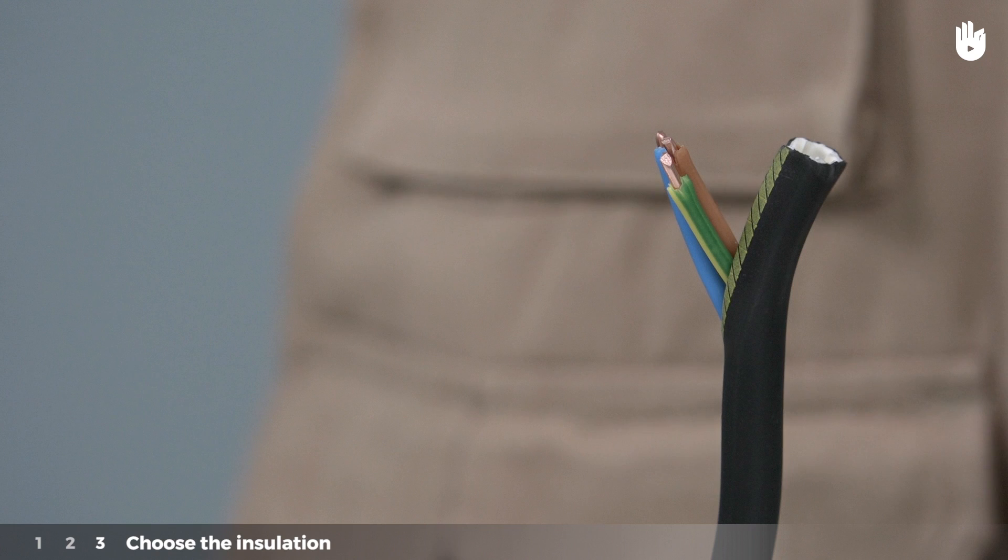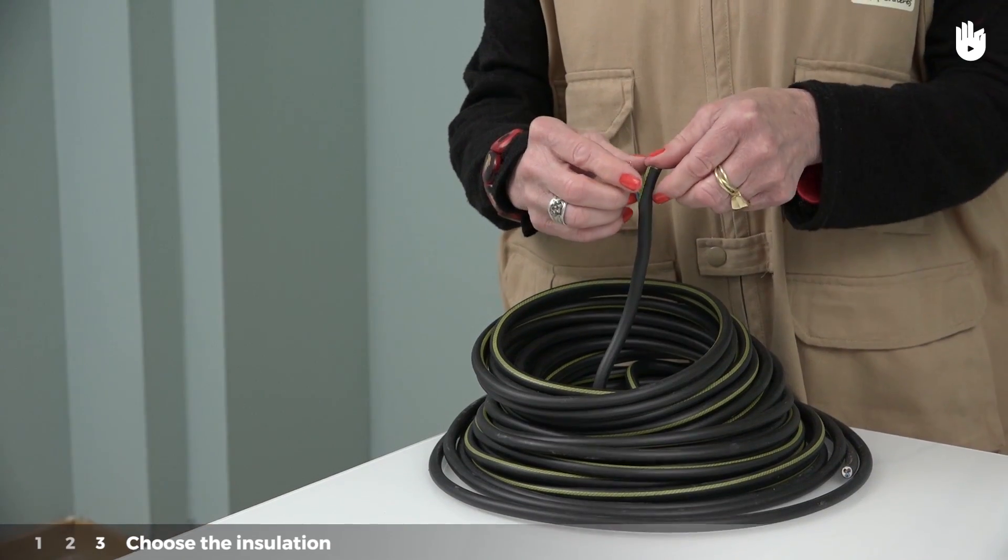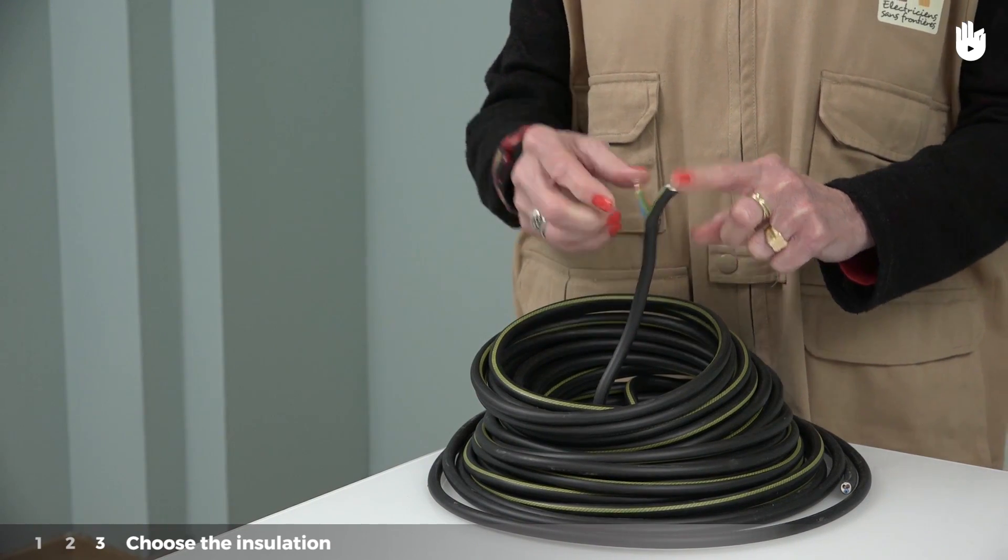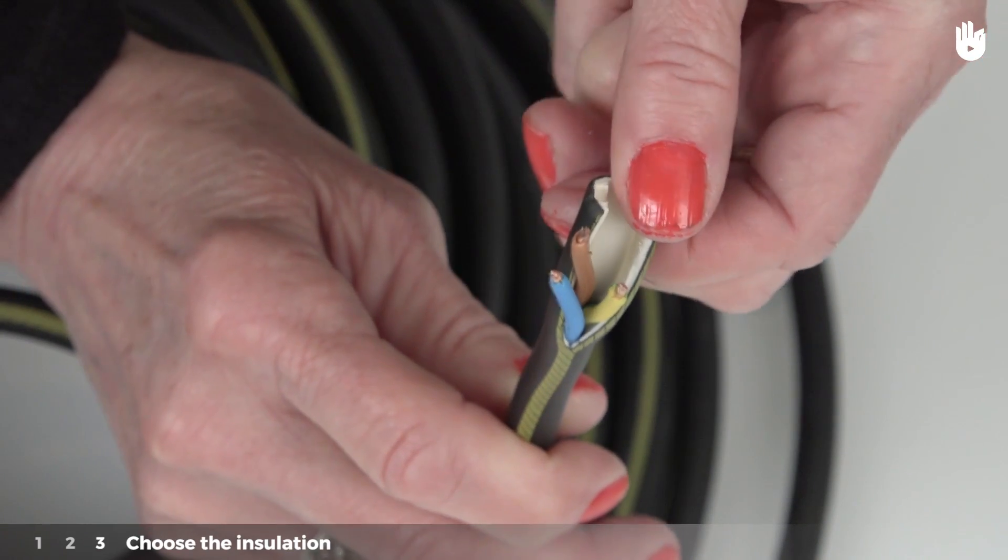Step 3: Choose the insulation. The protective casing must be adapted to the cable's environmental conditions, such as temperature, the presence of water, or the risk of mechanical impact.